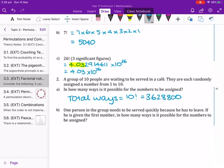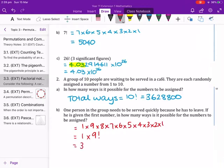What we now do for part B is that one person in the group needs to be served quickly because he has to leave. If he is given the first number, in how many ways is it possible for the numbers to be assigned? So if we think about it this way, that this guy needs to be given the first number, so there is only one way that he's going to get that. He's going to get the number 1, right? But then the people after it, there are 9 different people that could get the second number. So this is the same as 1 times 9 factorial. And when we calculate 1 times 9 factorial in our calculator, we get that it's 362,880 ways that it's possible for the numbers now to be assigned.